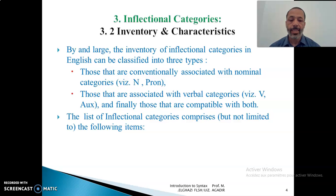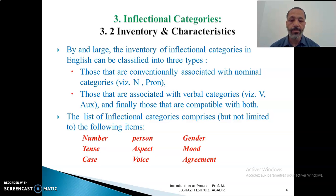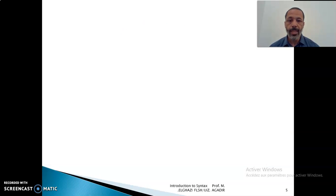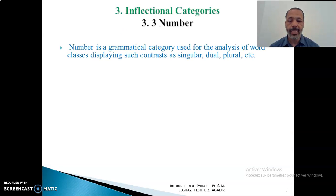The list of inflectional categories comprises, but is not necessarily limited to, the following items: number, person, gender, tense, aspect, mood, case, and voice agreement. Now we will start explaining each one of these. So first of all, we start with the category of number.